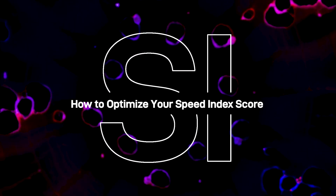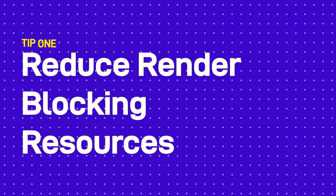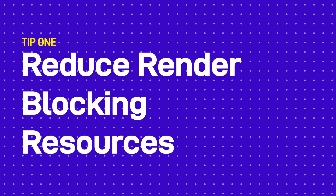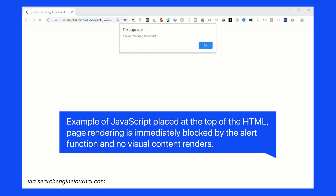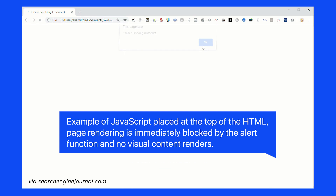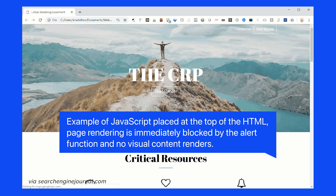How to Optimize Your Speed Index Score — Reduce Render Blocking Resources: These scripts and code prevent other parts of your website from loading by taking precedence. Instead of the site loading different elements concurrently, some elements pause all others until they're finished, and that lowers your site's Speed Index. To get around this, you could defer any number of scripts and bits of code that load until after the visible elements have painted to the DOM.